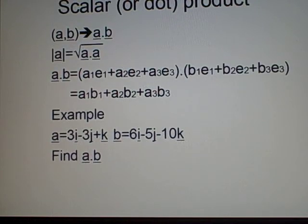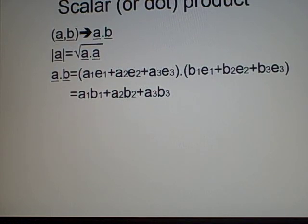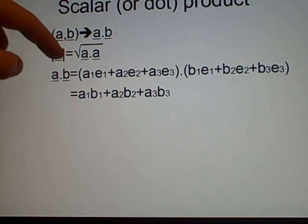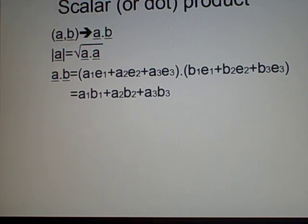Right, now the scalar, or dot product, is the first multiplication rule you can have with vectors. And this is where you get two vectors, you've got a and b, and you dot them together with a dot in the middle.